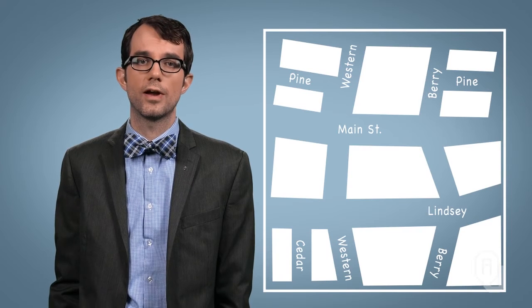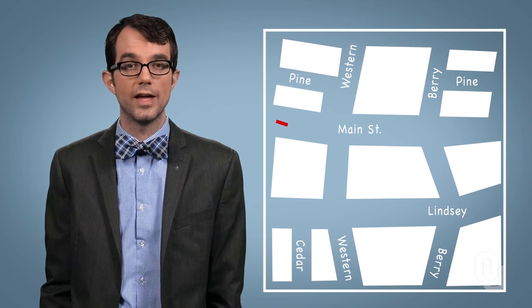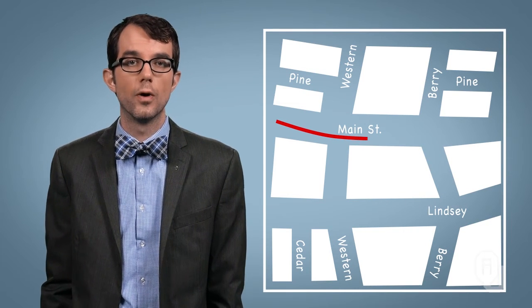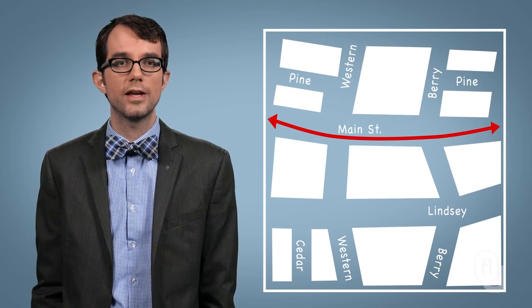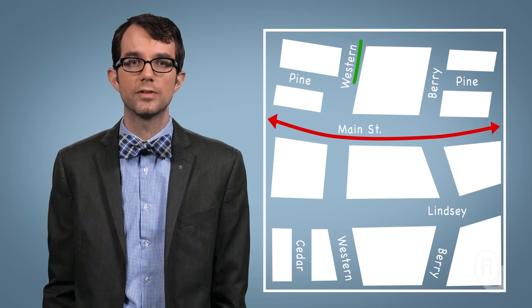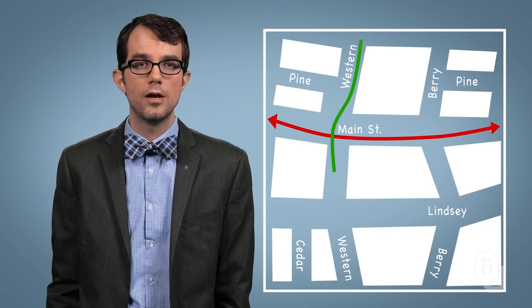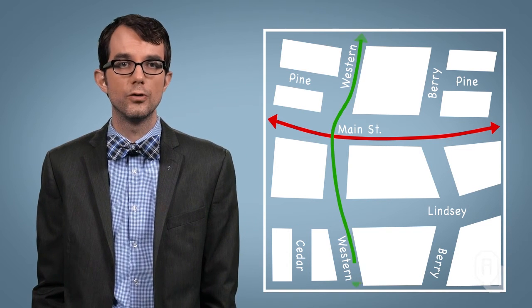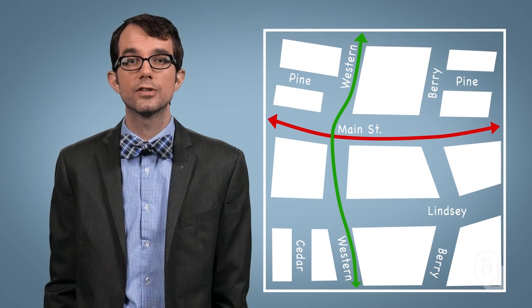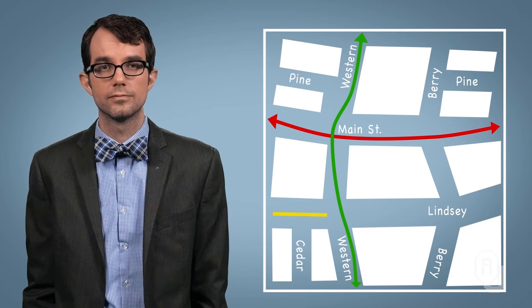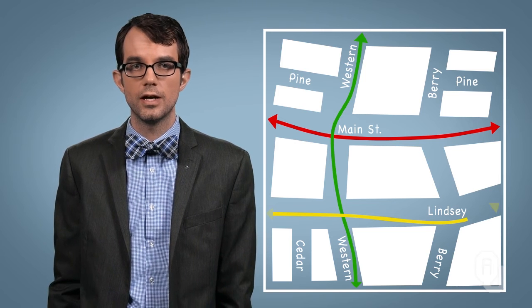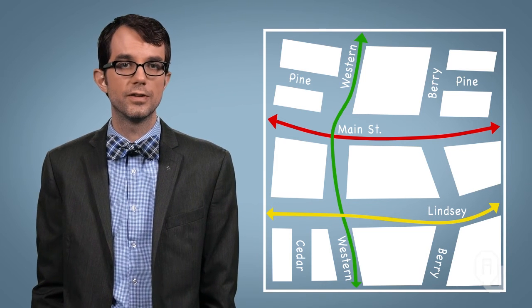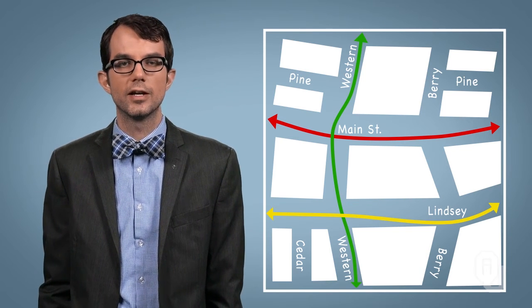For example, perhaps we want to know whether one evacuation route is better than another — that's a qualitative question: which one is better? To answer it, we have to determine what quantitative variable or variables might help us decide. Perhaps we can use average evacuation time per resident as a proxy. We could simulate several evacuation scenarios for a large city, collecting the evacuation time for each simulated resident, then make a comparison.